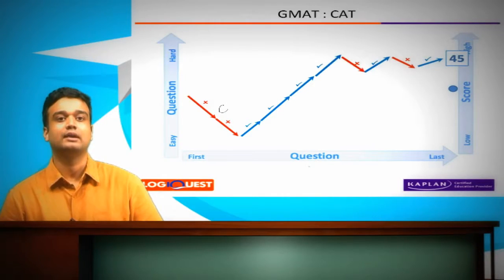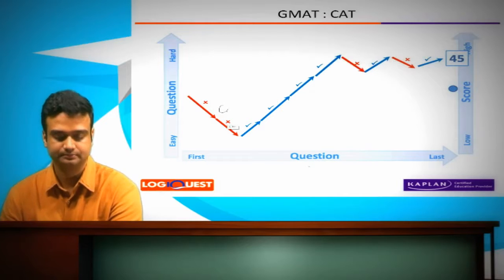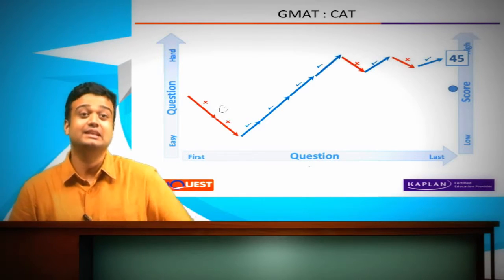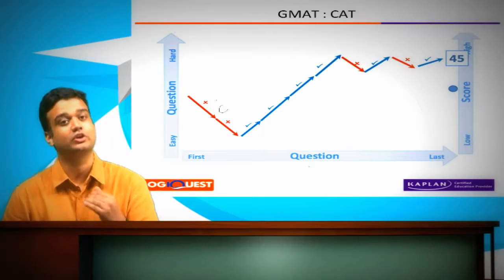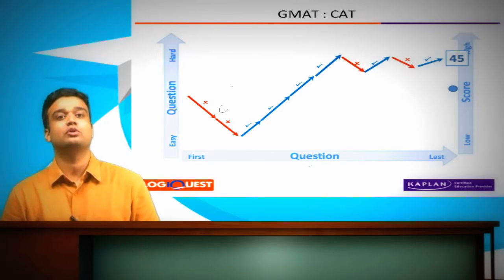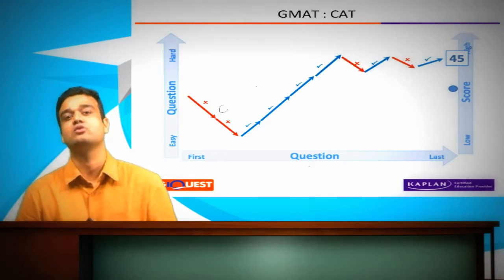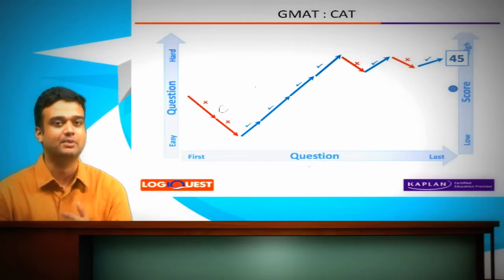And as a result, what happens is that the difficulty level of the question you see next is going to be lower. And also, that affects your score range at that particular point. So you're probably now at a 400 level or a little higher than that, perhaps.